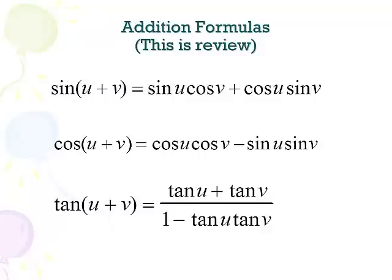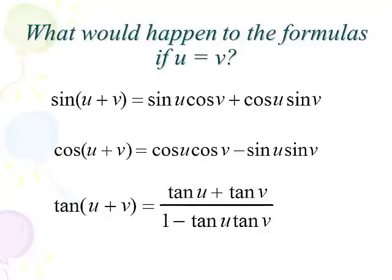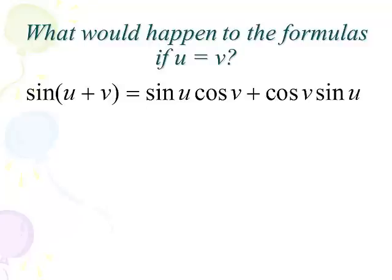We have the sine of u plus v, the cosine of u plus v, and the tangent of u plus v. Now, what's going to happen if we let u and v be the same angle? Notice that you have sine u, cosine v, cosine u, sine v for the first one. That's what we're going to be talking about in this lesson — we'll go through them one at a time.